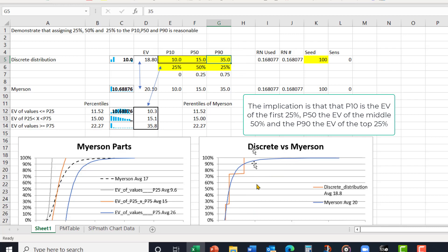So now this Myerson distribution is way longer. It's got a really long tail now. But once again, you can see the Myerson distribution P10, P50, P90 going in here as giving you a proper representation for the expected value.